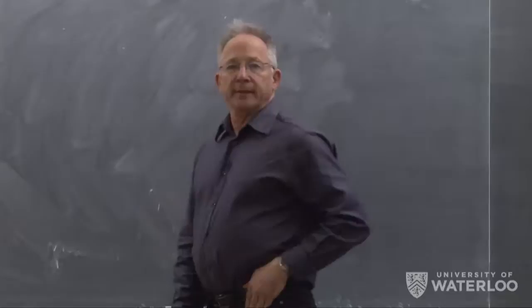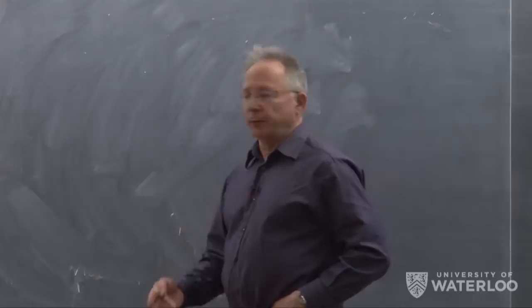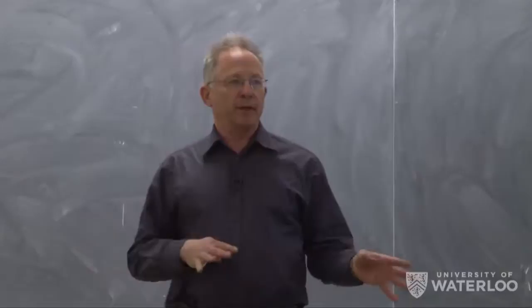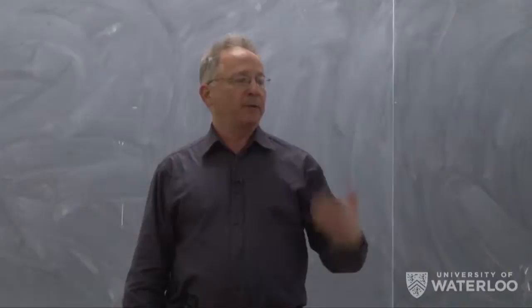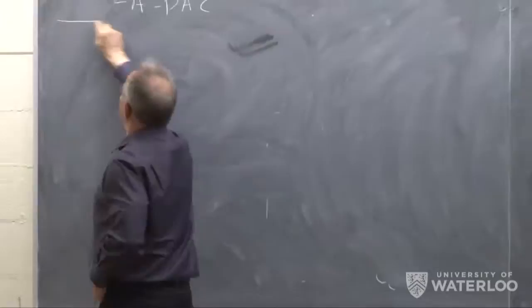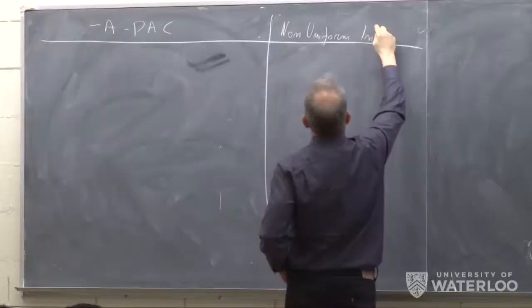What we're actually doing is following the same line of argument that we used in order to show that from a uniform convergence result, we get learnability depending on these dimensions. Let me try to draw the correspondence between what we've already seen in the case of PAC learning to what we are seeing now with respect to non-uniform learnability.